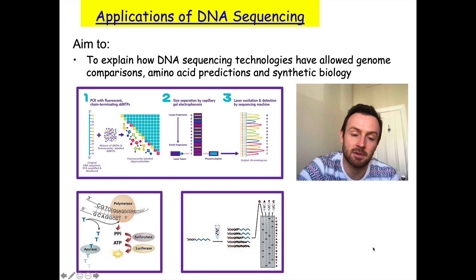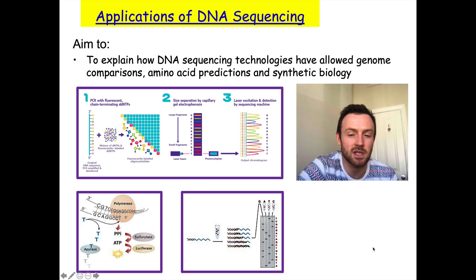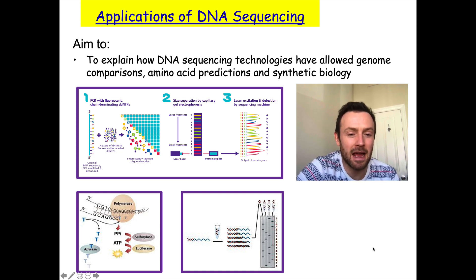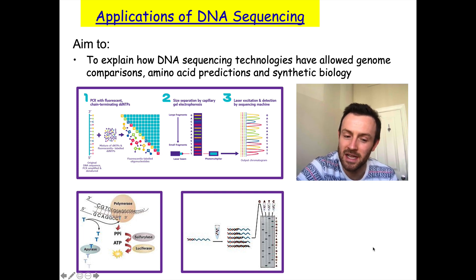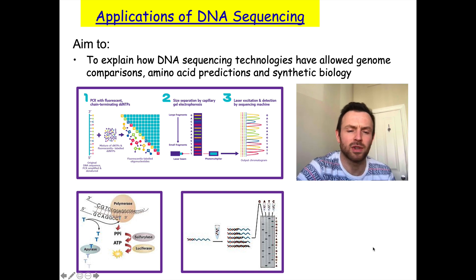Last lesson we looked at different ways of doing DNA sequencing. I'd like you to look at these three purple boxes and say out loud what method each diagram represents for the three methods of DNA sequencing, and also put them in order from oldest to newest.